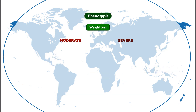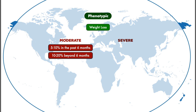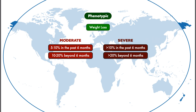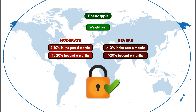Looking closer at the phenotypic criteria, for weight loss, moderate malnutrition is characterized by a loss of 5–10% body weight in the past 6 months, or 10–20% beyond 6 months. This one appears locked in because there doesn't appear to be any disagreement about it. Weight loss is featured in nearly all of the available malnutrition diagnostic tools, and the thresholds are somewhere in the ballpark of those listed here.